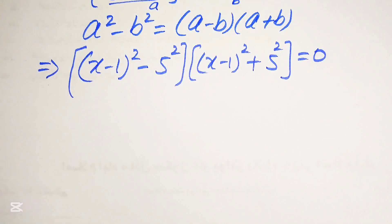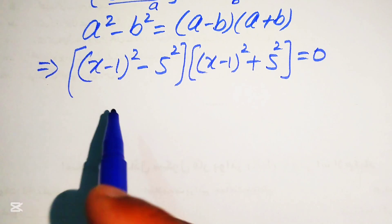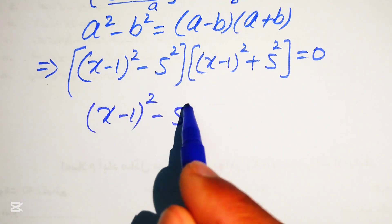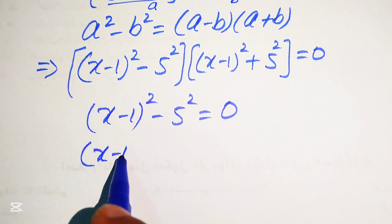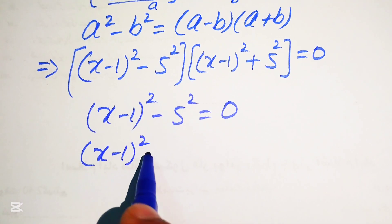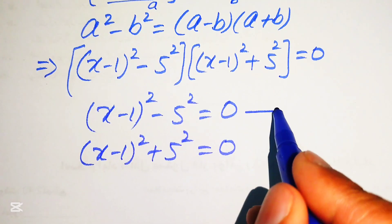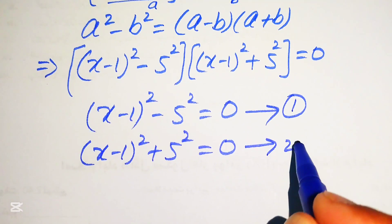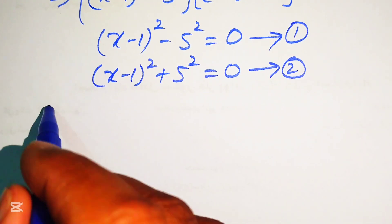We divide this into two cases. Case 1 (Equation 1): (x-1)² minus 5² equals 0. Case 2 (Equation 2): (x-1)² plus 5² equals 0. We will solve each equation separately.